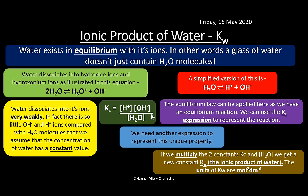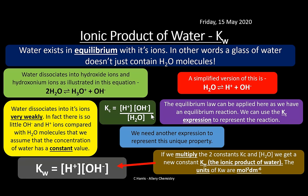If we multiply the two constants - Kc and the concentration of H₂O - we get a new constant called Kw, the ionic product of water. The units of Kw are mol² dm⁻⁶. The Kw expression is: Kw = [H⁺][OH⁻]. You'll use this particularly when calculating the pH of bases, so make sure you're aware of that Kw expression.